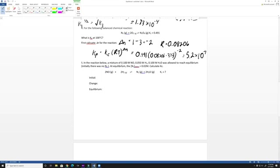In the reaction below, a mixture of 0.1 molar NO, 0.05 molar H2, and 0.1 molar H2O was allowed to reach equilibrium. Initially there was no N2. At equilibrium, the concentration of N2 is 0.02. Calculate KC. This is a gaseous reaction, but we're asked to calculate KC based on concentrations.